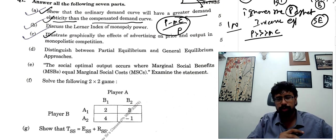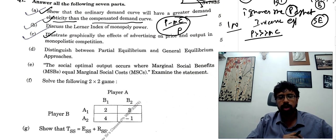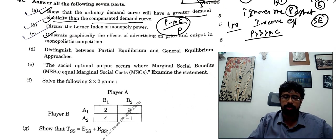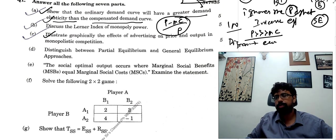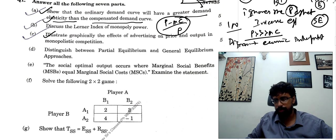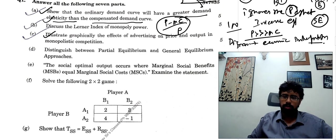Question 3: illustrate graphically the effects of advertising on price and output in monopolistic competition. This is also very easy. The diagram was very important — diagram and economic interpretation, which I always say. So both of these you need to put. I will come to this exact answer.